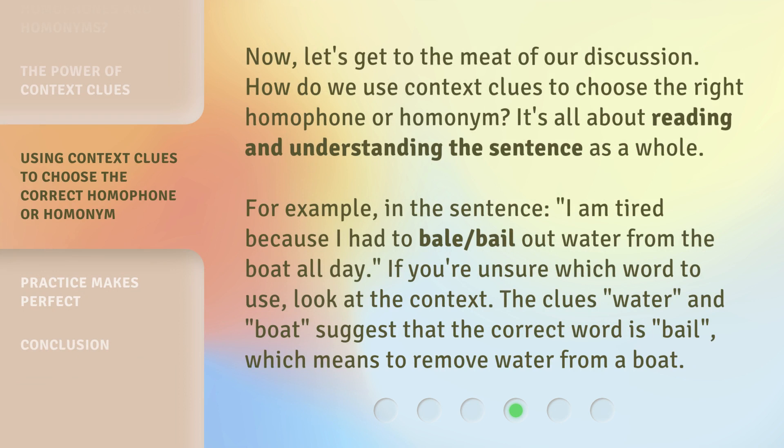Now, let's get to the meat of our discussion. How do we use context clues to choose the right homophone or homonym? It's all about reading and understanding the sentence as a whole. For example, in the sentence 'I am tired because I had to bail out water from the boat all day,' if you're unsure which word to use, look at the context. The clues 'water' and 'boat' suggest that the correct word is 'bail,' which means to remove water from a boat.